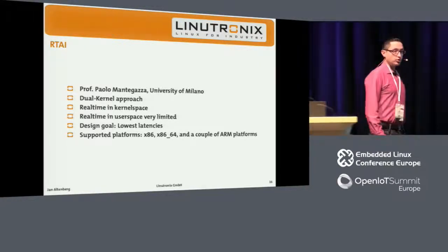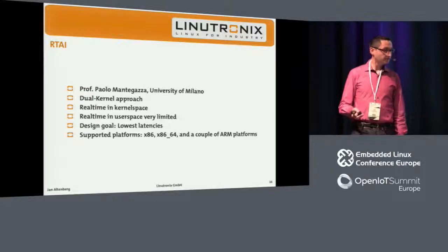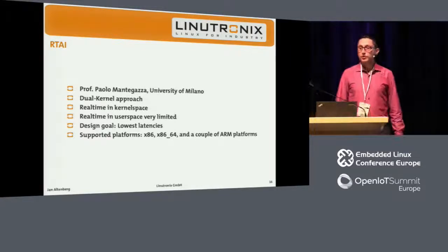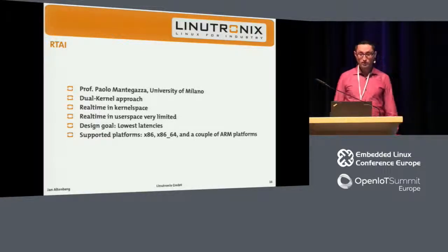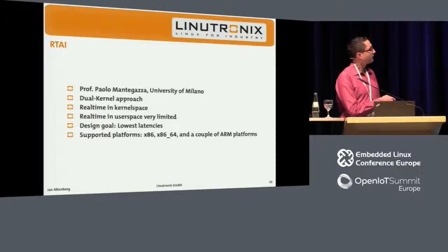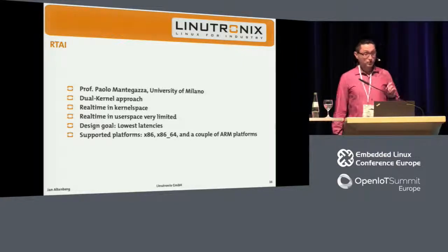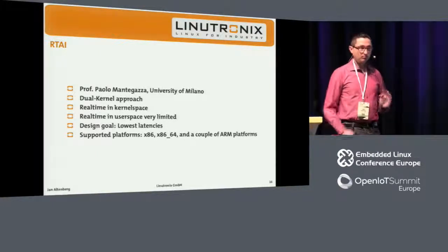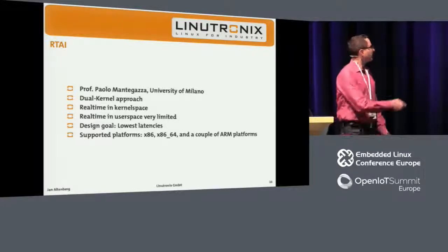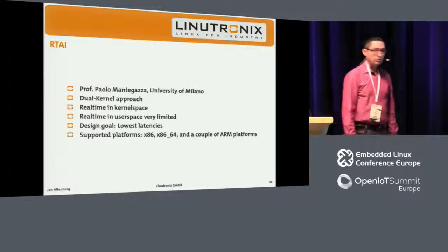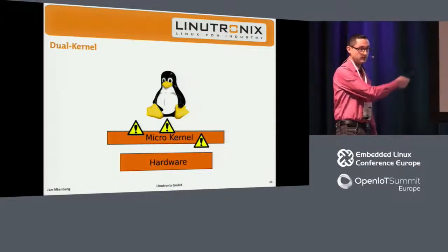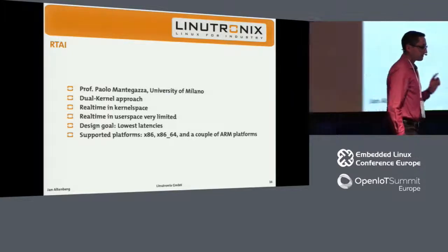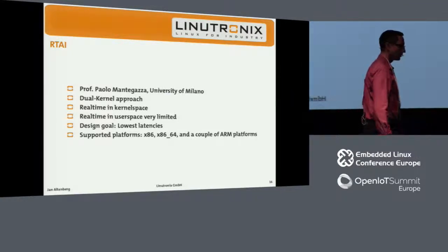One of the very first approaches we had for Linux and real-time was RTAI — the so-called Real-Time Application Interface. It comes from the University of Milano in Italy. They used it for a couple of aerospace applications, and this was actually the first real-time Linux I was using, about 15 years ago. This approach has been around for years. RTAI is a classical dual-kernel approach.